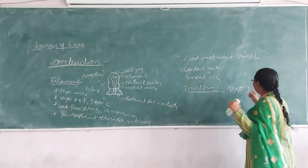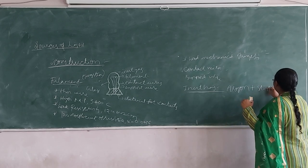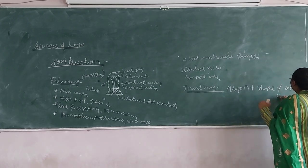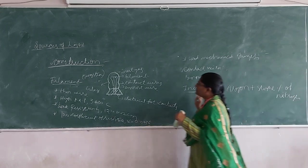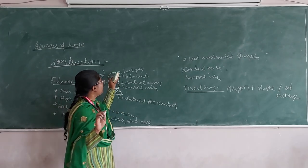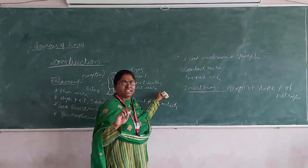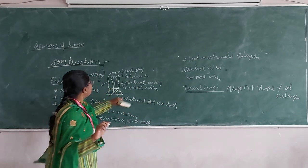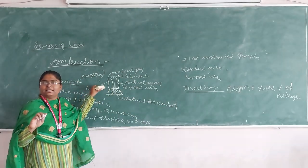Along with argon, we use a very little percentage of nitrogen. So the idea of using inert gas is to overcome the evaporation and oxidation effect. This is about the construction features of an incandescent lamp.